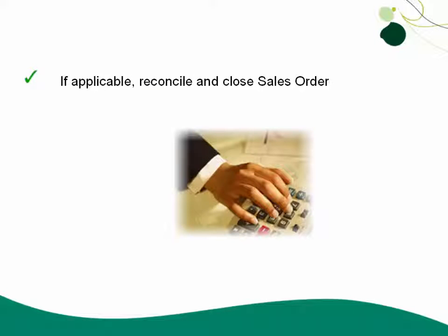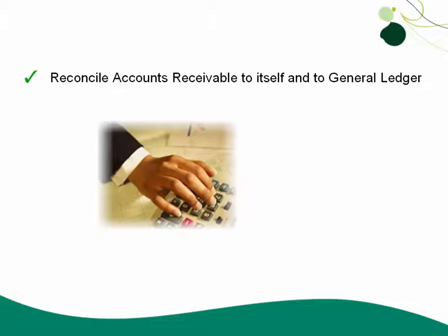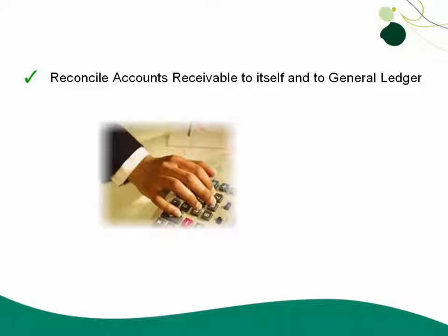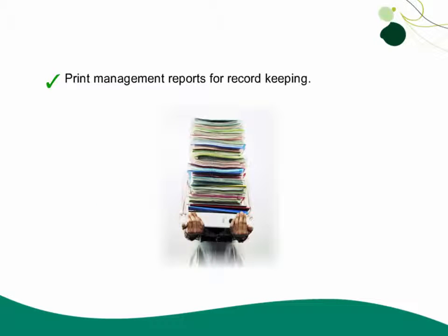If applicable, you're going to need to reconcile and close Sales Order. You'll then reconcile Accounts Receivable to itself and to General Ledger. You'll make any necessary adjustments to balance, and then you'll want to compare your reports to make sure everything is in balance before closing the period and the year.